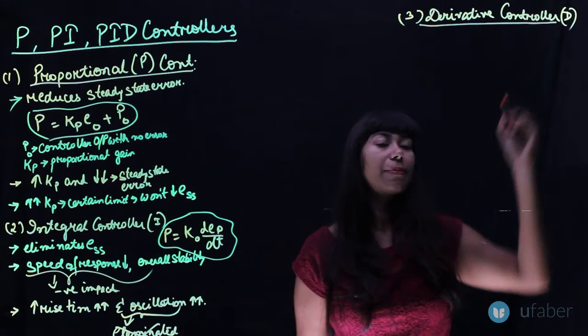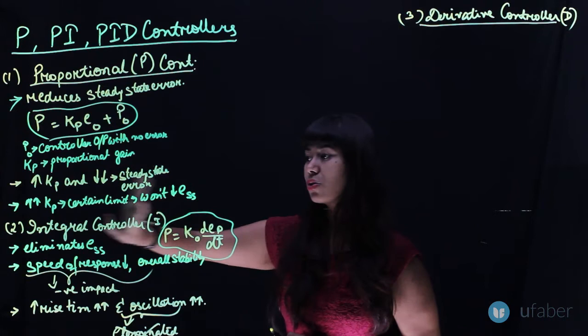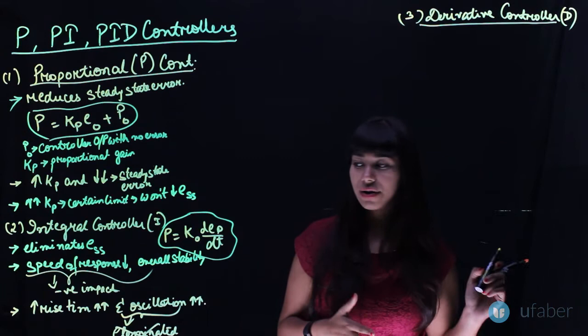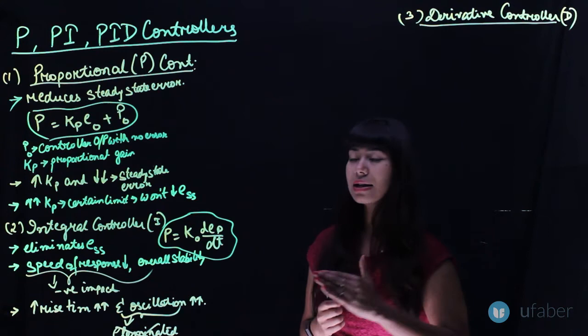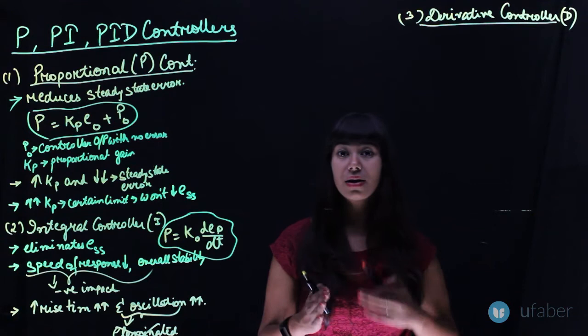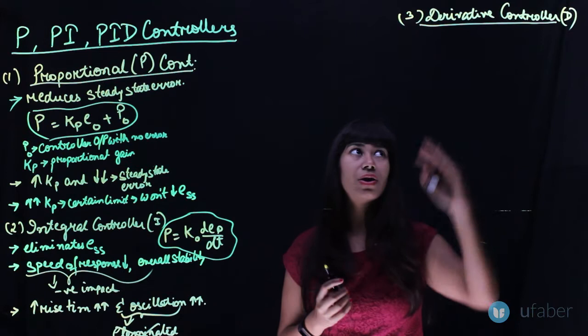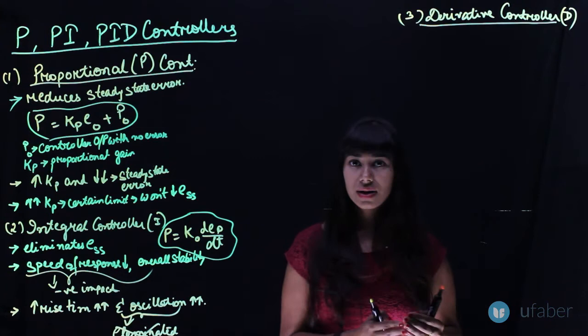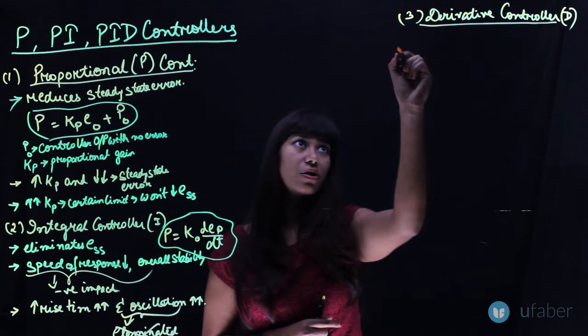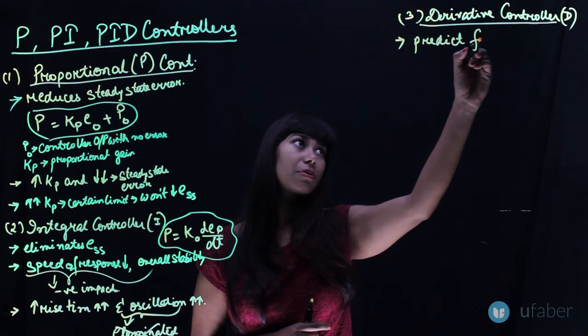The Derivative or D type controller works differently from the integral controller. The integral controller cannot predict future errors — it only responds to steady state error as it comes. The derivative controller, however, predicts the future errors of the system. It has evolved beyond the P and integral controllers since it can predict future errors in the system.